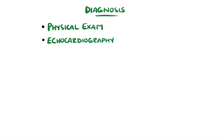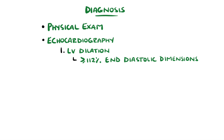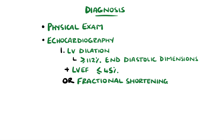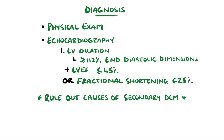Echocardiography is the first-line imaging done, and part of the criteria for dilated cardiomyopathy include left ventricular dilation, shown by end-diastolic dimensions more than 112% of the expected for the age and body surface area. As well as this, there must be evidence of dysfunction, shown by an ejection fraction of 45% or less, or a fractional shortening value of less than 25%. These values are for idiopathic dilated cardiomyopathy; therefore, secondary causes of dilated cardiomyopathy need to be ruled out.